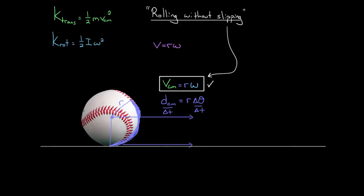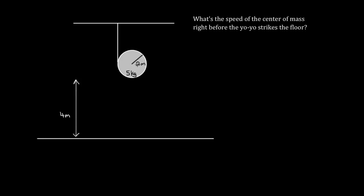Let's do some examples. Say you take a solid cylinder of 5 kilograms with a radius of 2 meters, wind a bunch of string around it, tie the loose end to the ceiling, let go, and let this cylinder unwind downward. It's going to be moving downward — a yo-yo essentially. Say you drop it from a height of 4 meters. How fast is the center of mass going to be moving right before it hits the ground? We're winding the string around the outside edge, and this is basically a case of rolling without slipping.